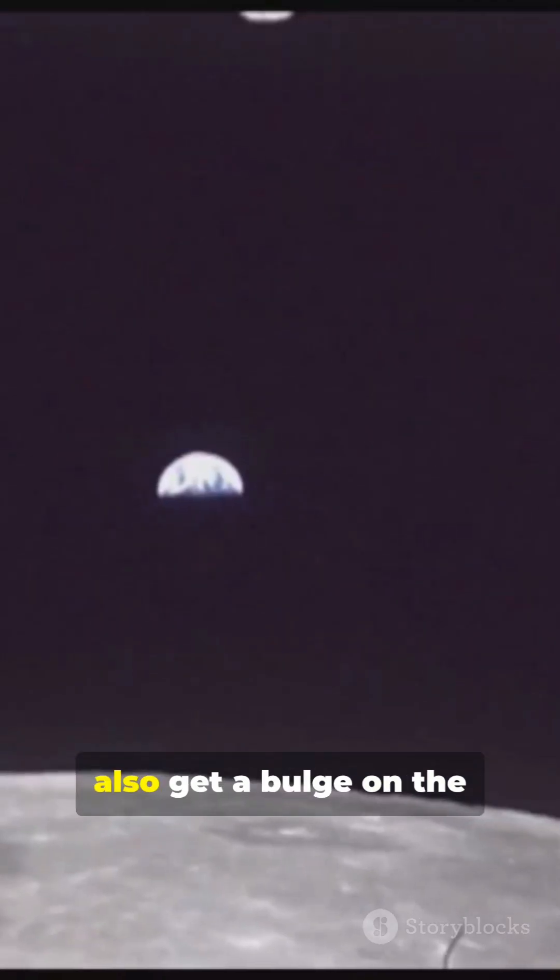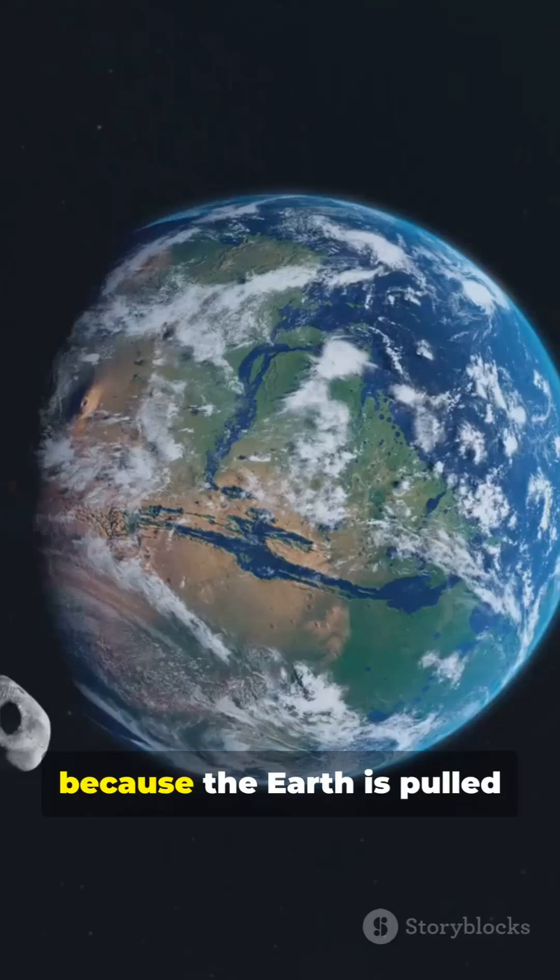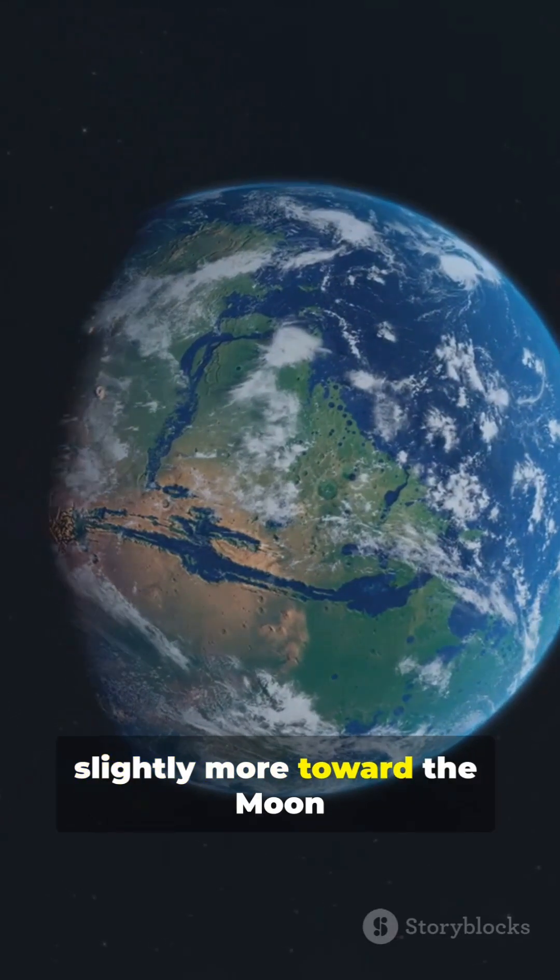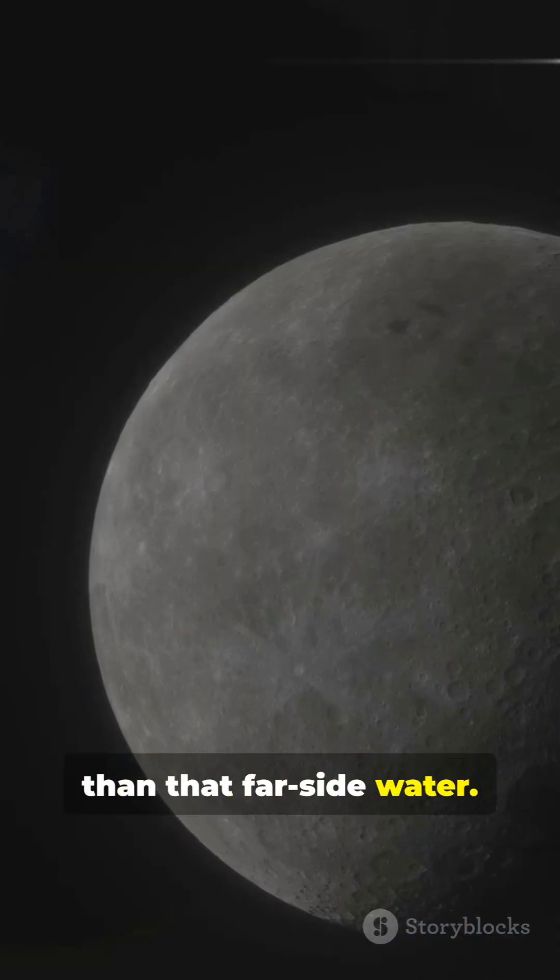Water gets a bulge on the side facing the moon. But here's the myth bust. We also get a bulge on the opposite side, because the Earth is pulled slightly more toward the moon than that far side water.